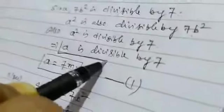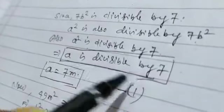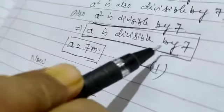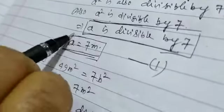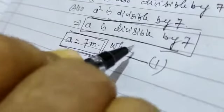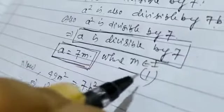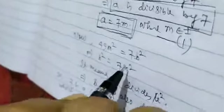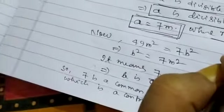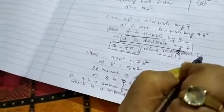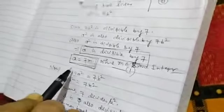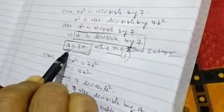So A is divisible by 7, just I have written in the case when I proved that root 2 is irrational. So now, you write: A is divisible by 7, so A is a multiple of 7, where M belongs to integer. So A is equal to 7M, where M belongs to some integer. So in this way, I proved the first part: A is divisible by 7.